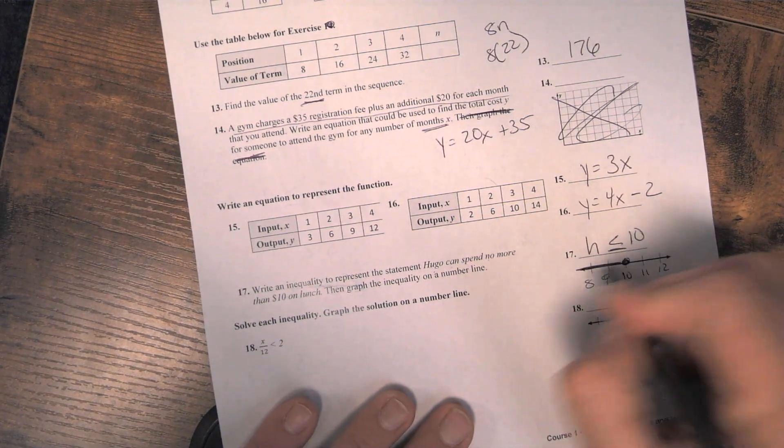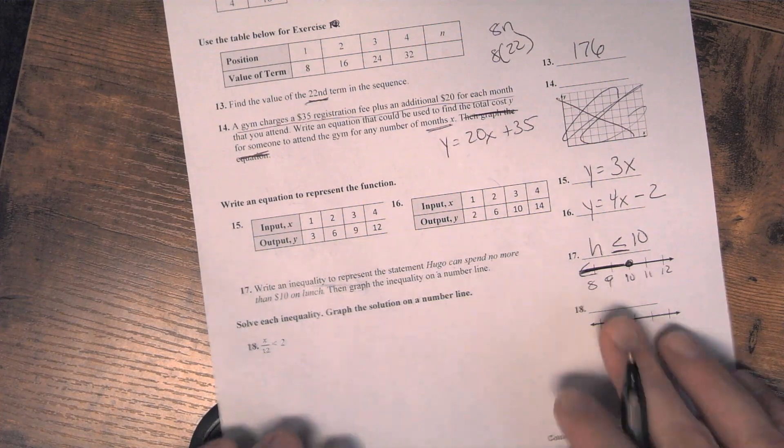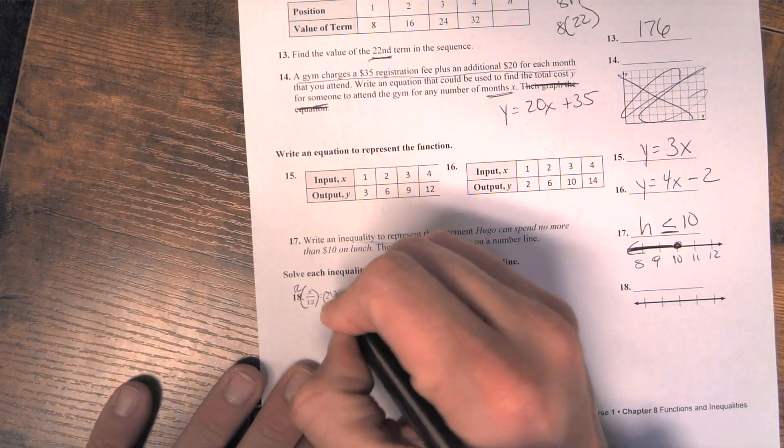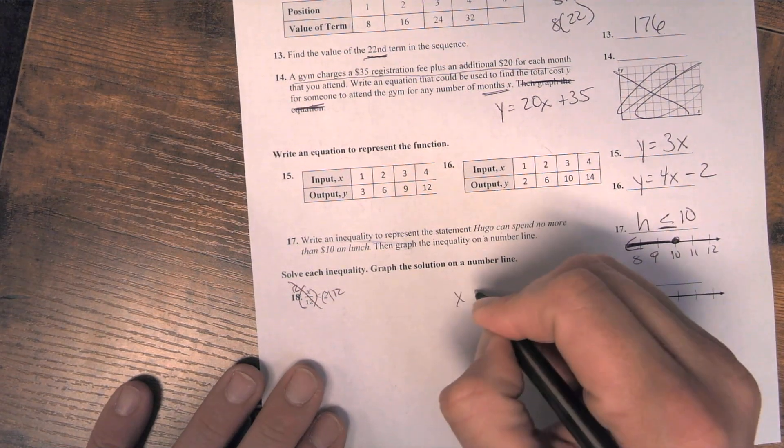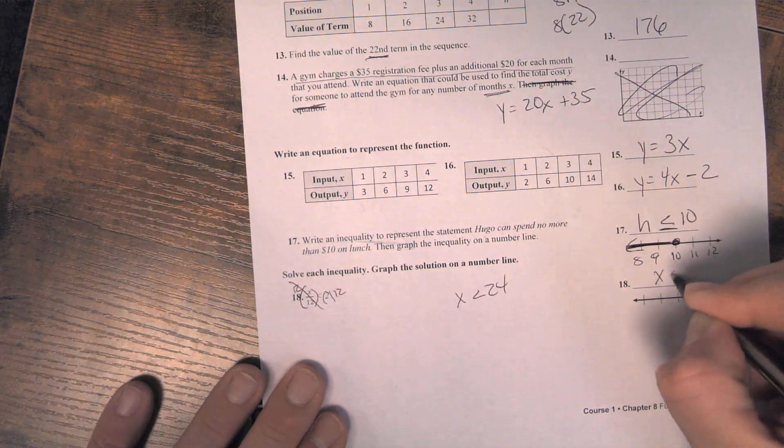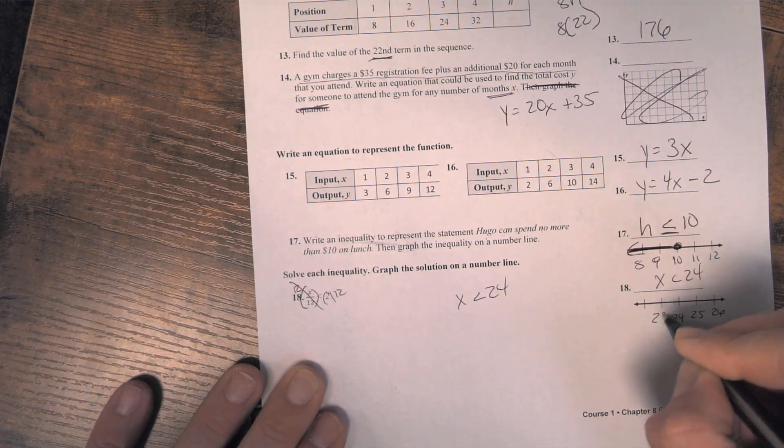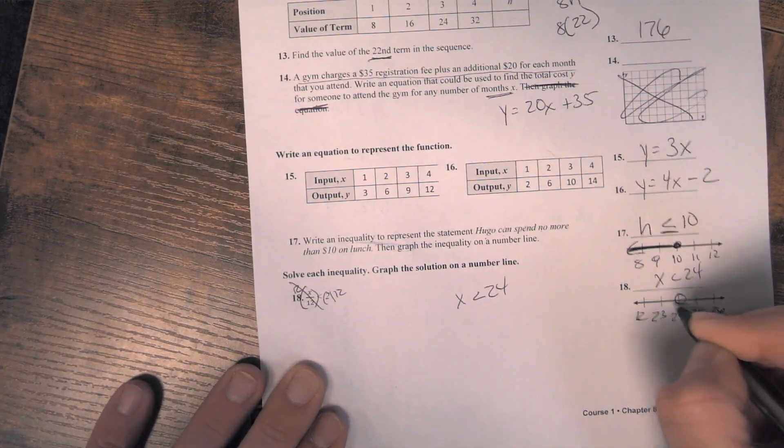And then number 18, we're multiplying by 12. So x is less than 24. So we graph this now. And that is a circle on the left.